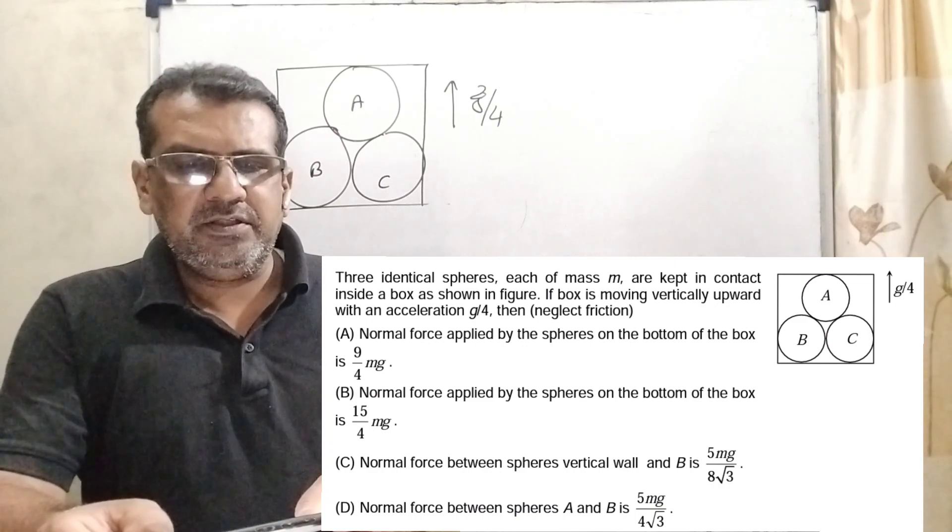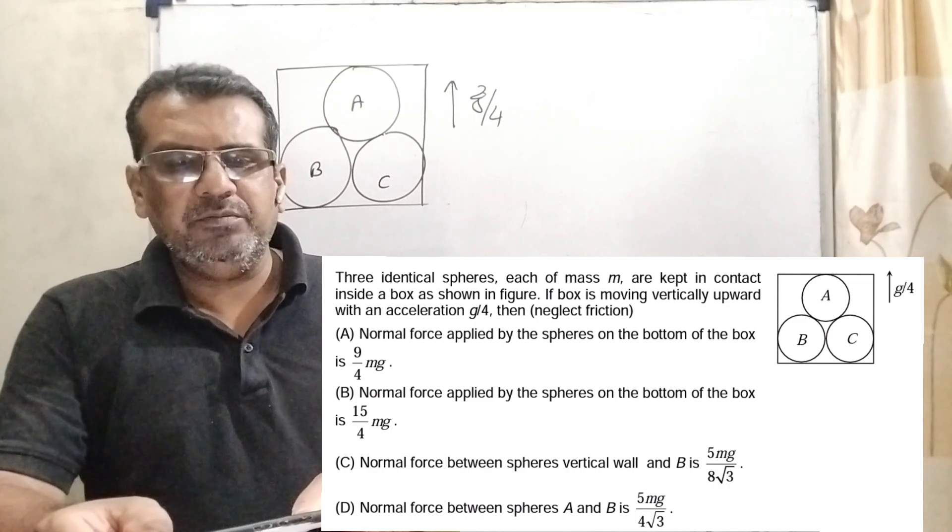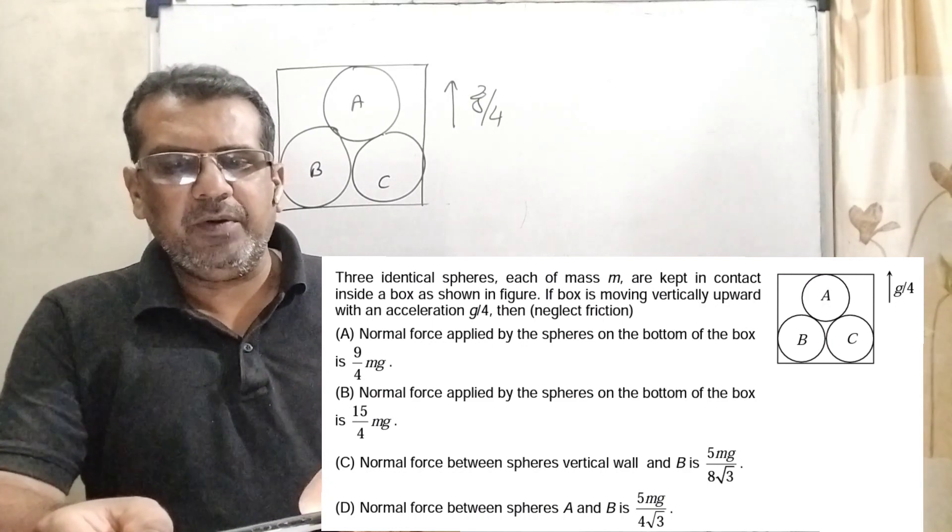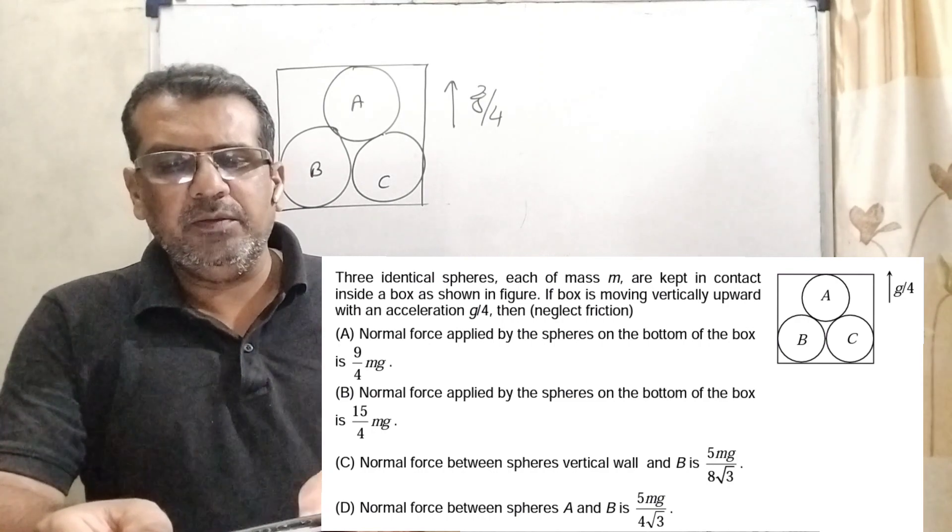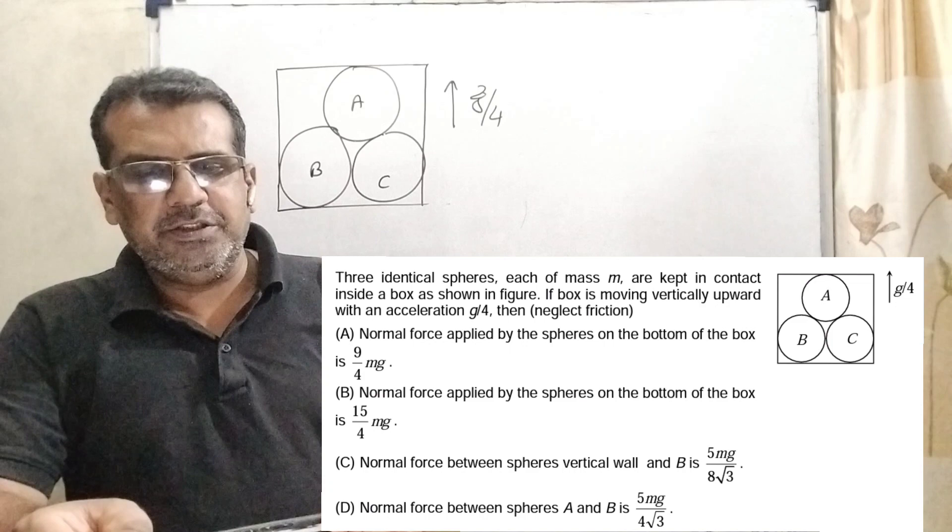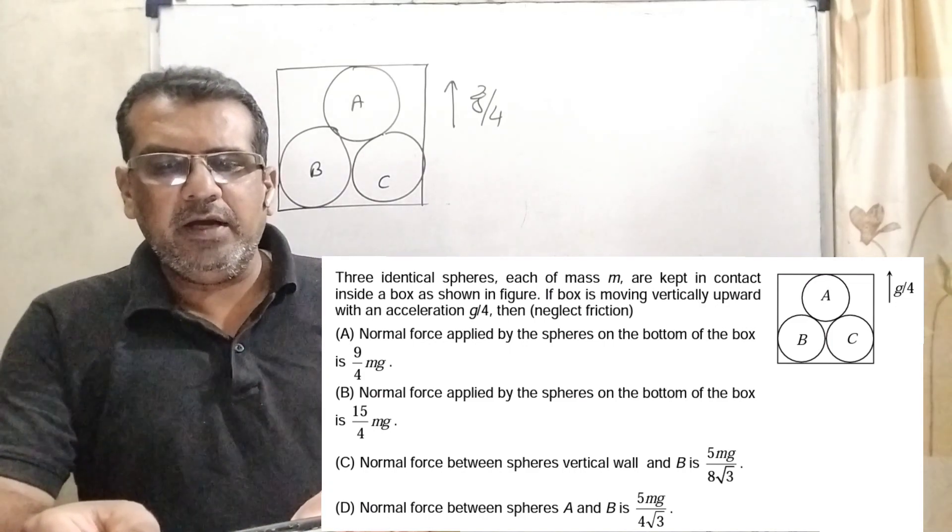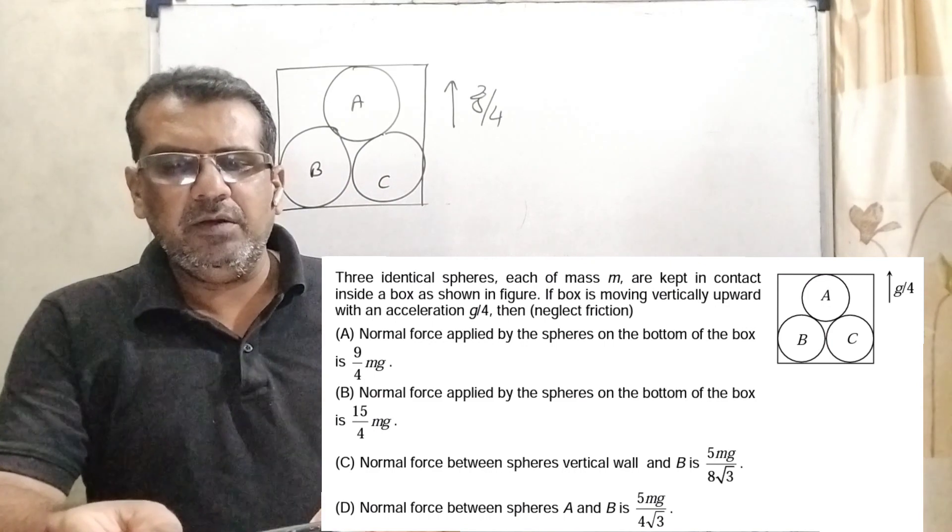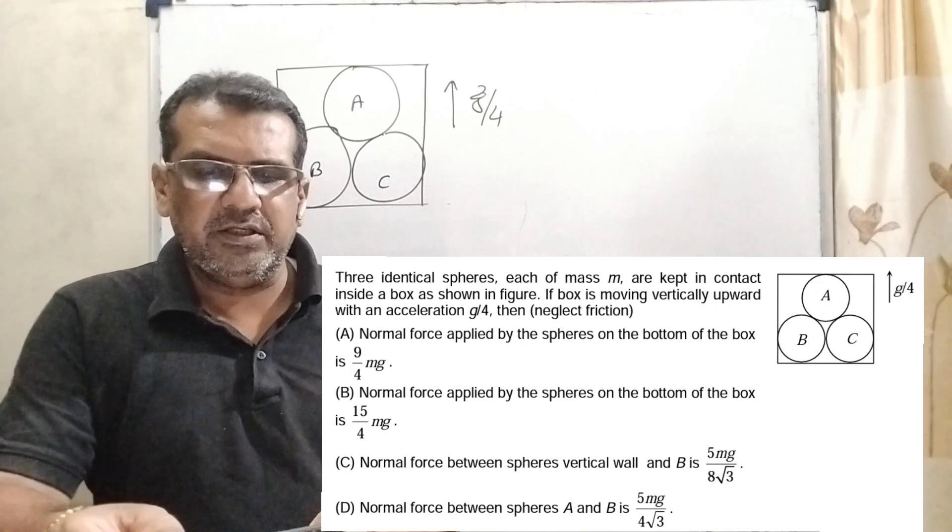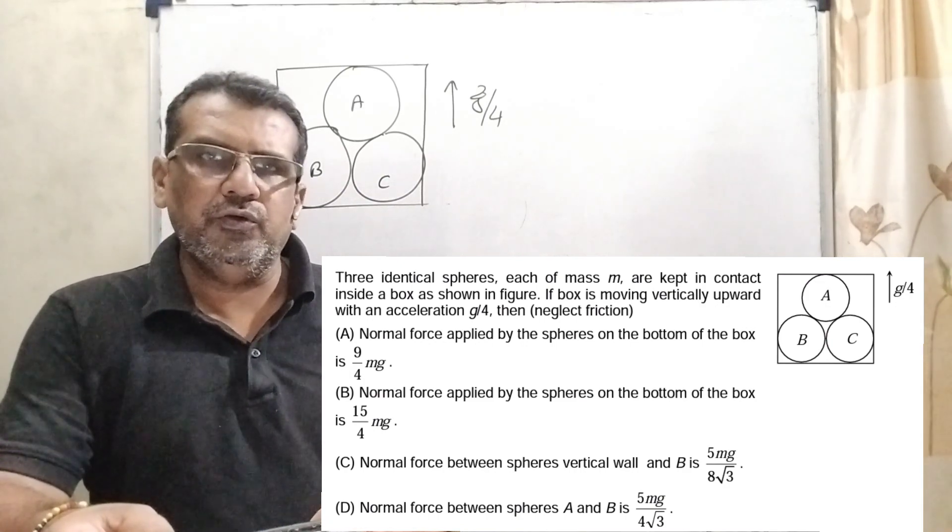Here we have given four options and that is a multiple choice question. Option A: normal force applied by the spheres on the bottom of the box is 9 by 4 mg. Option B: normal force applied by the spheres on the bottom of the box is 15 by 4 mg. Option C: normal force between the spheres and vertical wall B is 5 mg by 8 root 3. And option D: normal force between spheres A and B is 5 mg by 4 root 3.